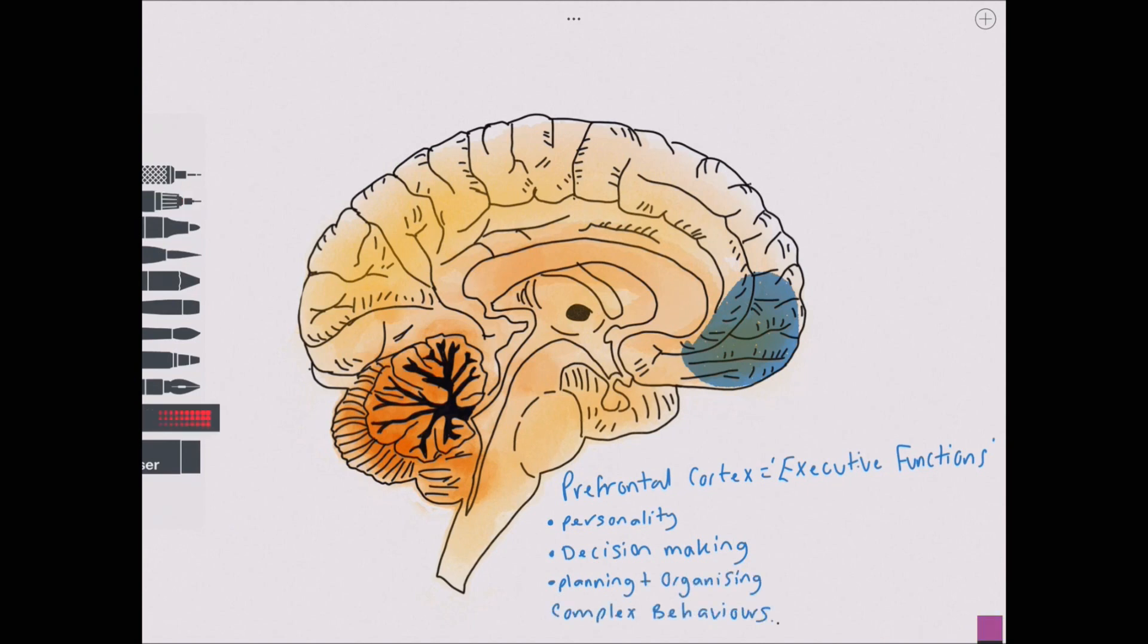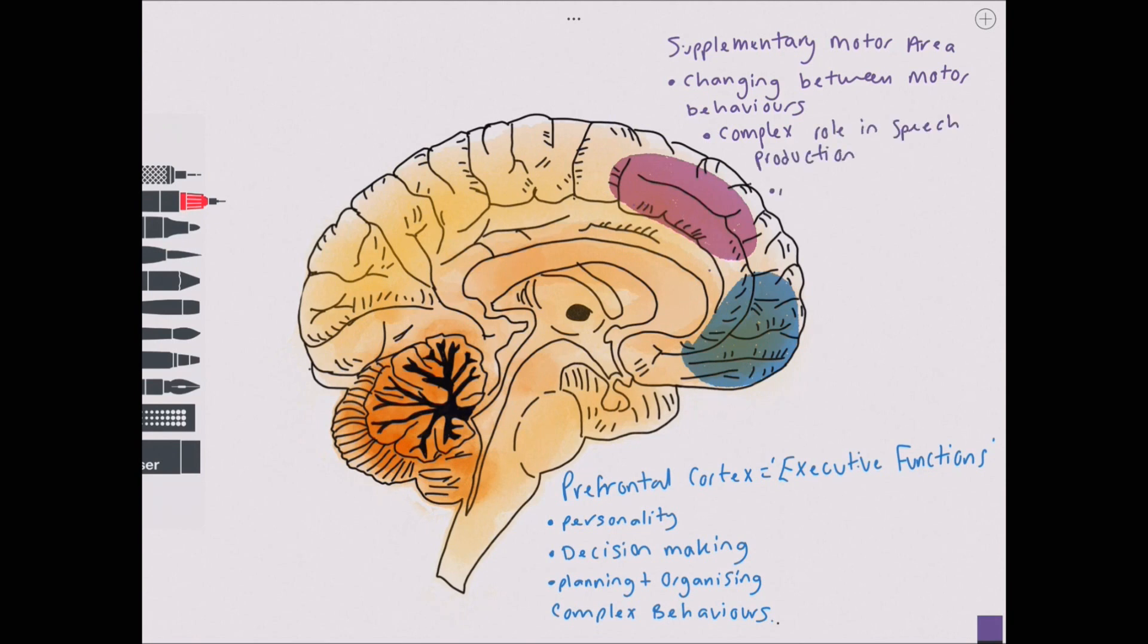The second area is the supplementary motor area, which can be seen here in purple. The exact function of this area is not well understood, but it is thought to be involved in the process of changing between motor activities, and it also has a complex role in the production of speech. Within the supplementary motor area is an area called the micturition inhibitory area, which prevents urination.